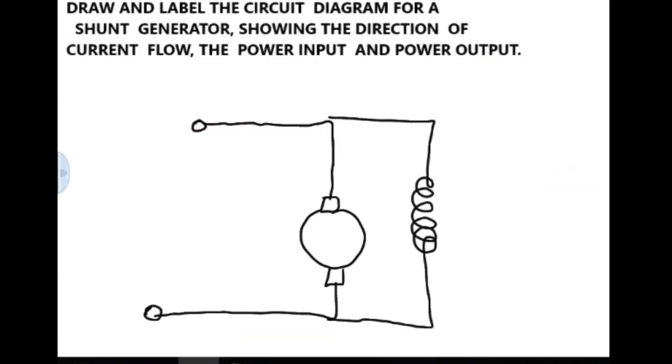So here we have a shunt winding connected in parallel to a generator. We use a small letter G to remind us that this is a generator. Therefore, the generator is producing armature current and supplying electrical load. A small amount of current passes through the shunt winding, and we will call this I shunt.